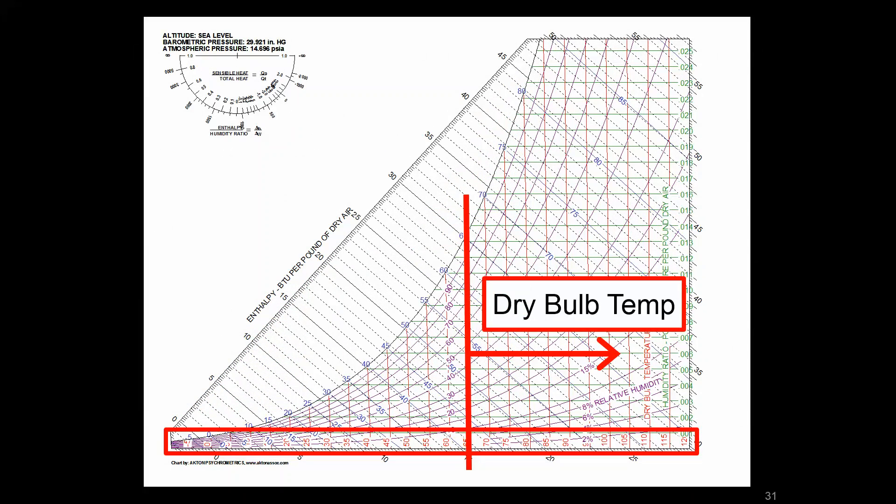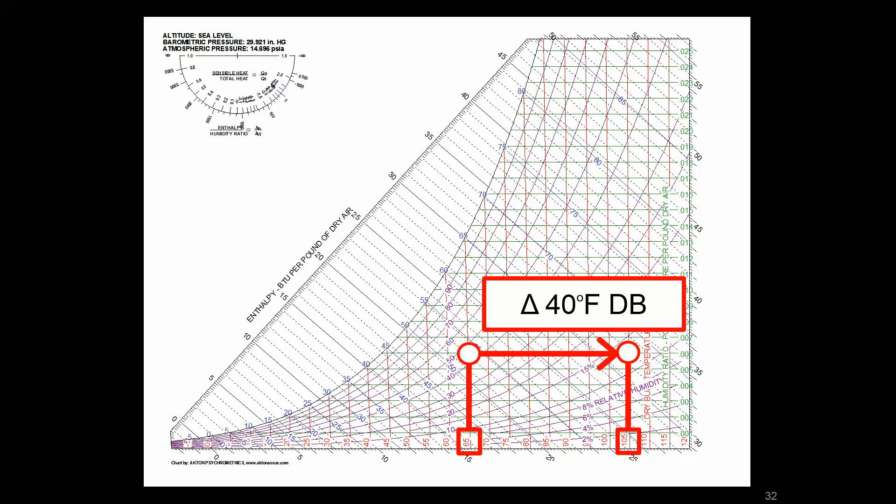The first one is the most intuitive, which is temperature or dry bulb temperature. This is that sensible temperature we can feel with our skin and measure with a basic thermometer. From left to right goes from decreasing to increasing temperature. Any points on a vertical line have the same dry bulb temperature. In this example, we're going from 65 to 105 degrees Fahrenheit, a delta of 40 degrees Fahrenheit dry bulb temperature.